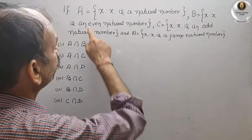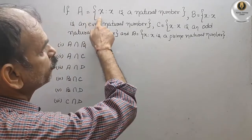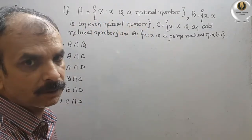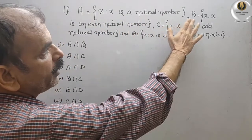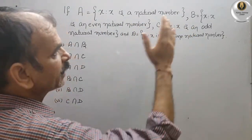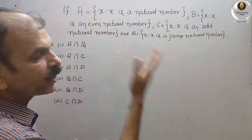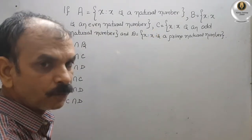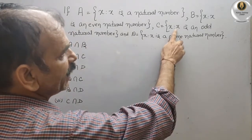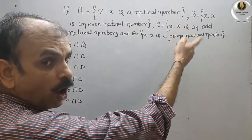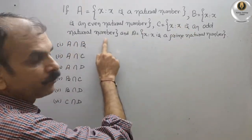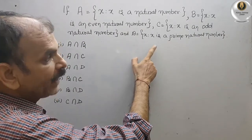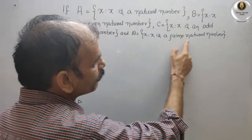Your question is: if A is equal to the set of all X such that X is a natural number, and B is equal to the set of all X such that X is an even natural number, C is equal to the set of all X such that X is an odd natural number, and D is the set of all X such that X is a prime natural number.